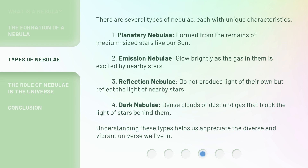There are several types of nebulae, each with unique characteristics. First, planetary nebulae, formed from the remains of medium-sized stars like our sun. Second, emission nebulae, which glow brightly as the gas in them is excited by nearby stars. Third, reflection nebulae, which do not produce light of their own but reflect the light of nearby stars. Fourth, dark nebulae, dense clouds of dust and gas that block the light of stars behind them. Understanding these types helps us appreciate the diverse and vibrant universe we live in.